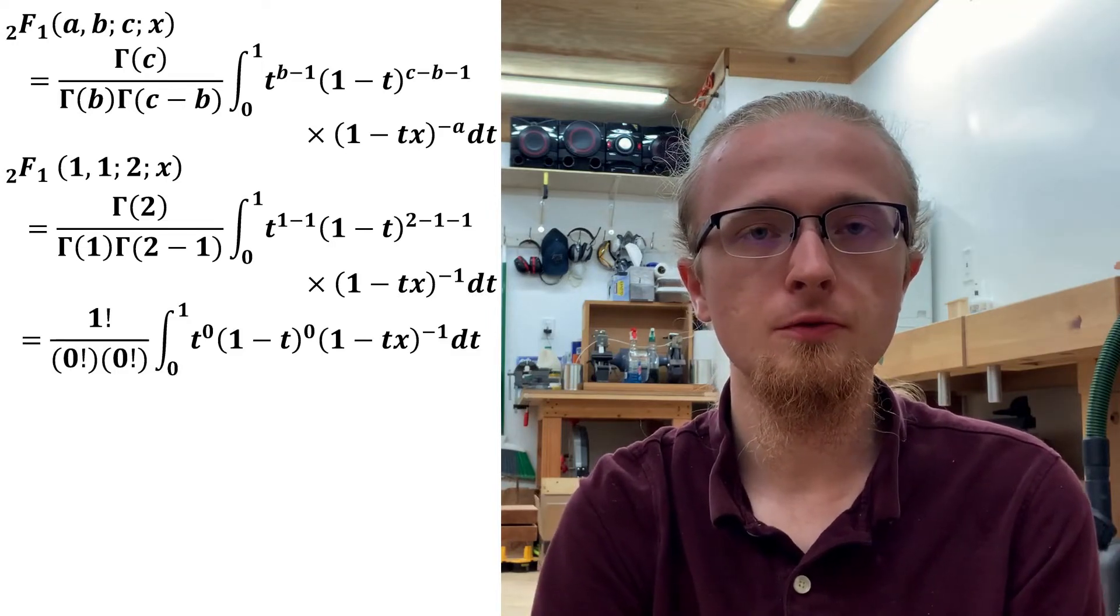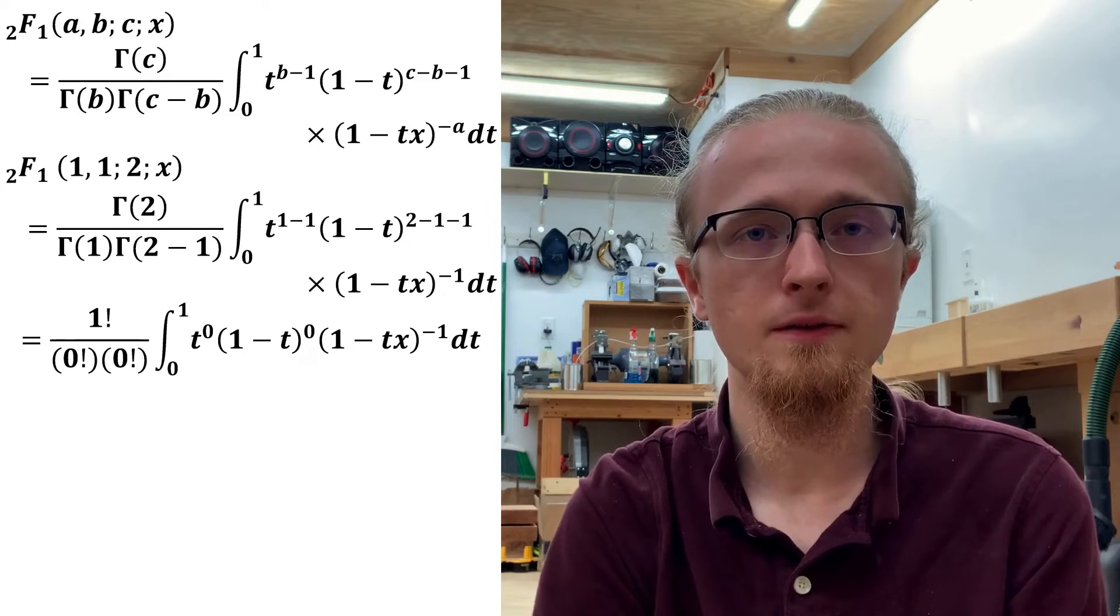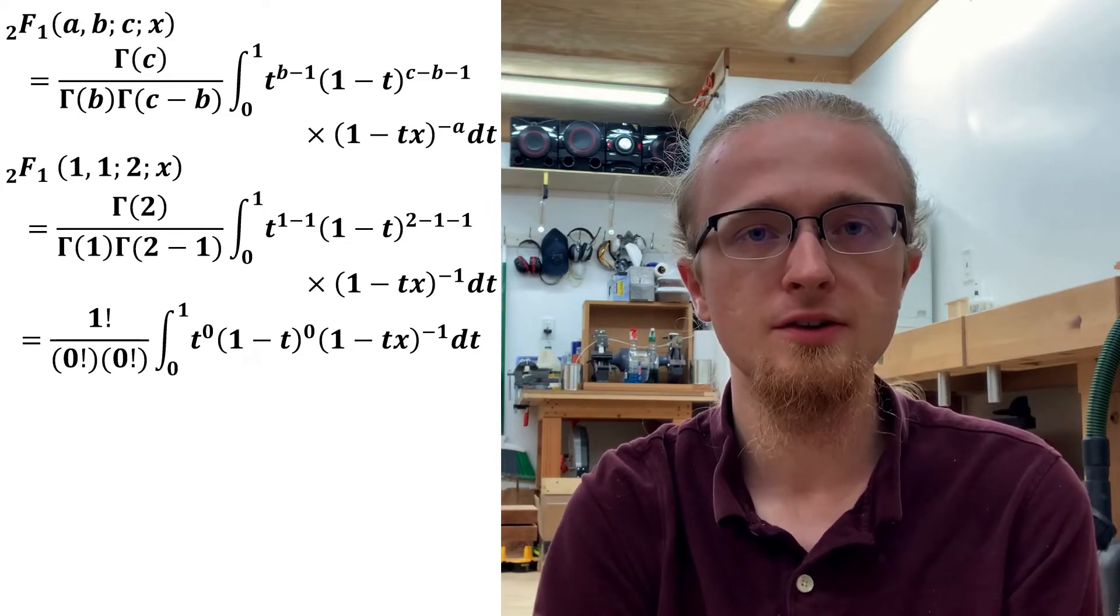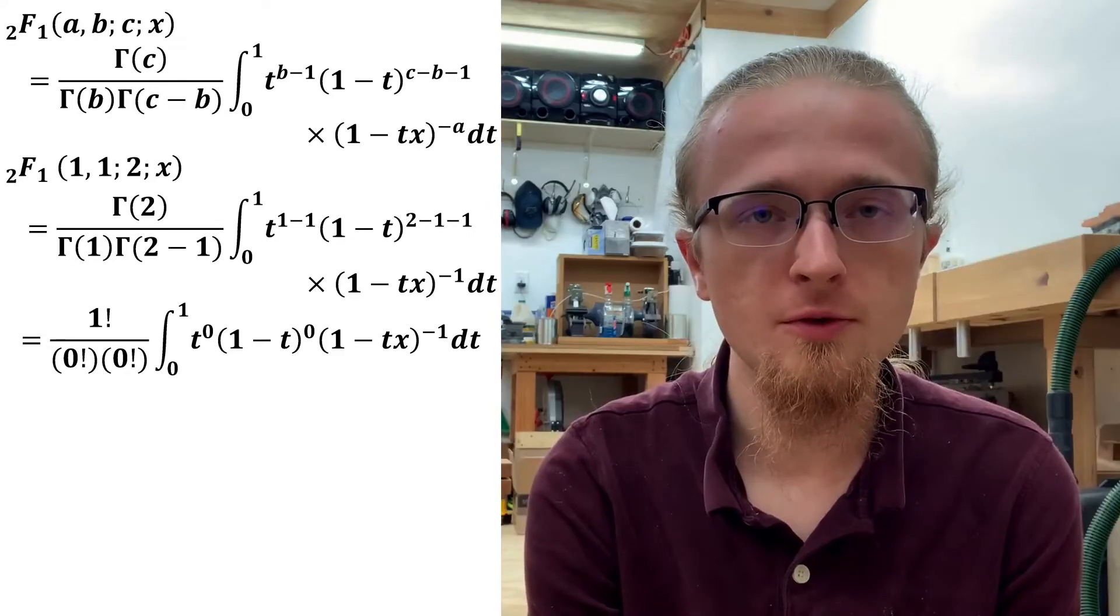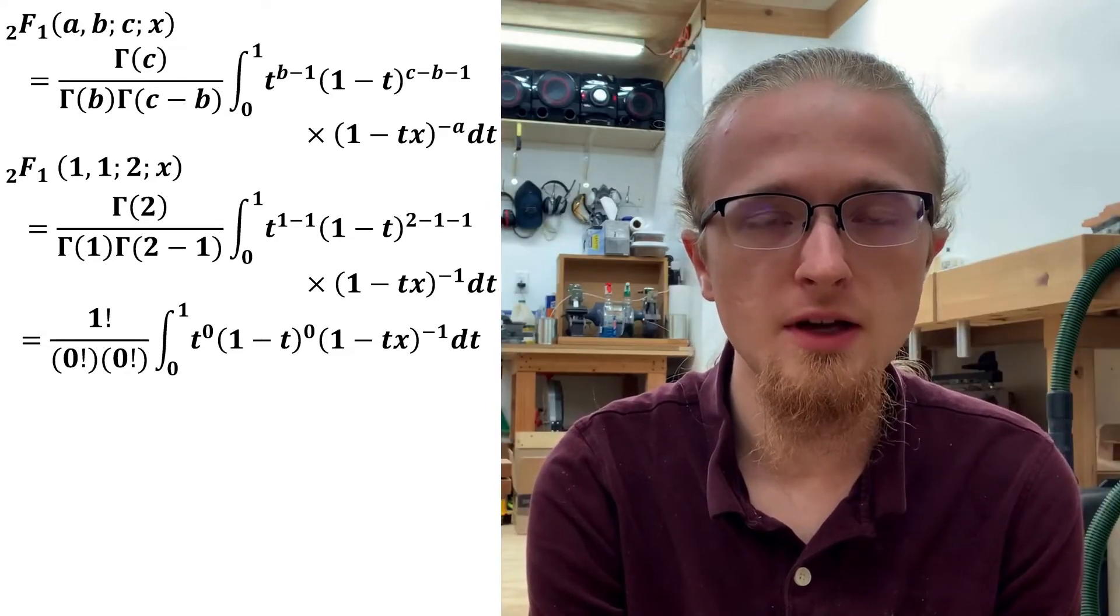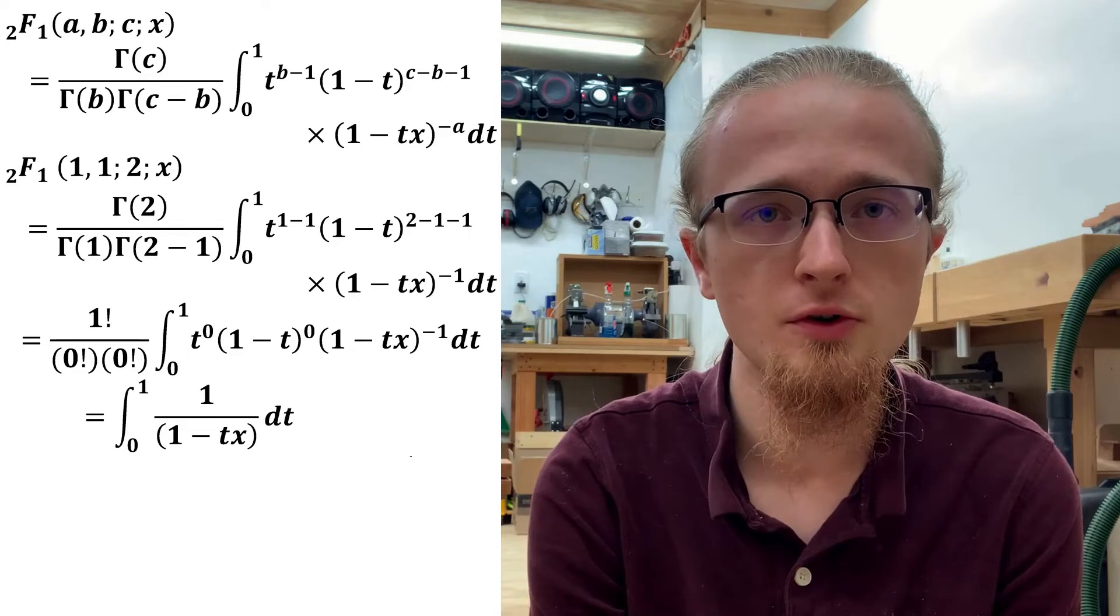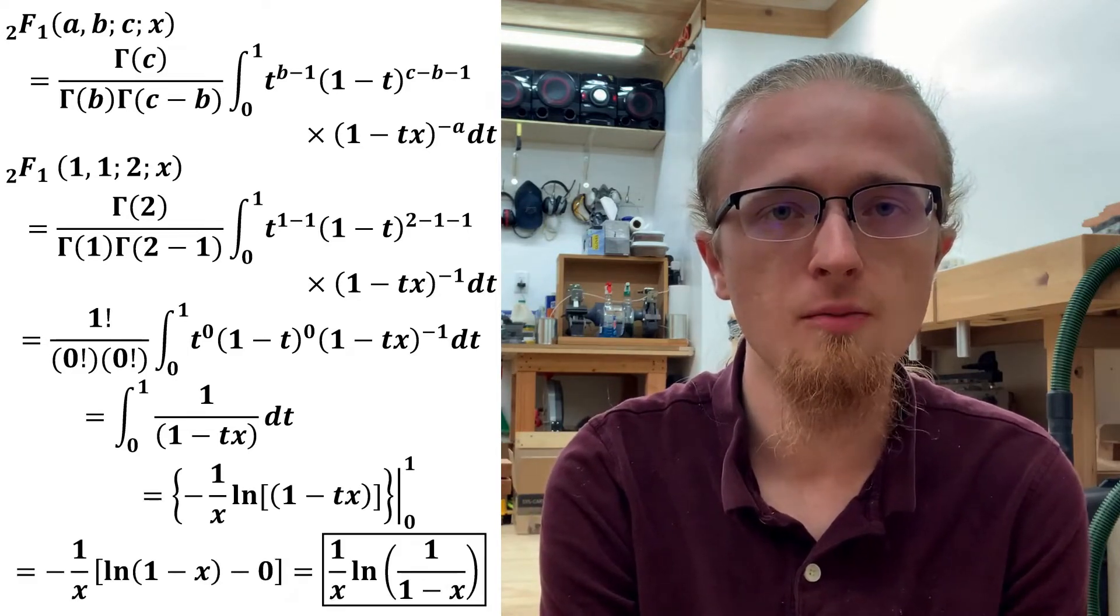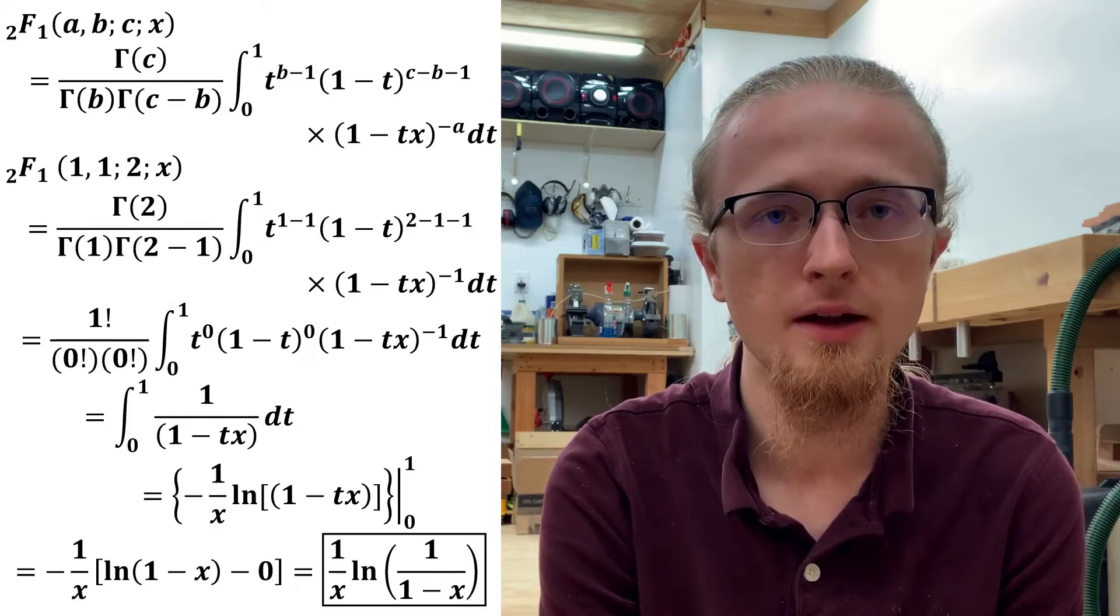In doing this, it's useful to remember that the gamma function evaluated at a given integer is equal to the factorial of the integer one less than that given integer. With that simplification, we straightforwardly obtain an integral over t that's proportional to a logarithm. We can then plug in the integration bounds and simplify using log properties, and we arrive at our final answer.